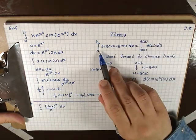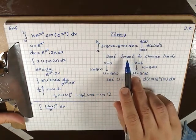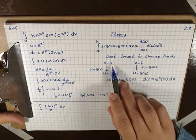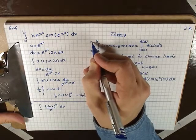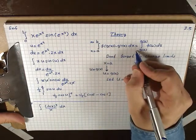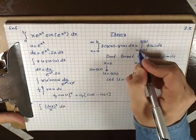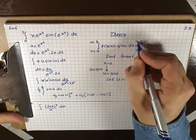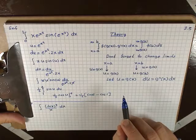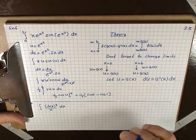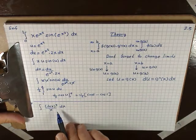Let's go over the theory. When you have the integral from a to b of f(g(x))·g'(x) dx, don't forget to change the limits. x = a and x = b are limits that belong to x. Plug x = a into u = g(x) to get u = g(a), and plug x = b to get u = g(b). This is the idea when you have a definite integral involving the method of substitution.